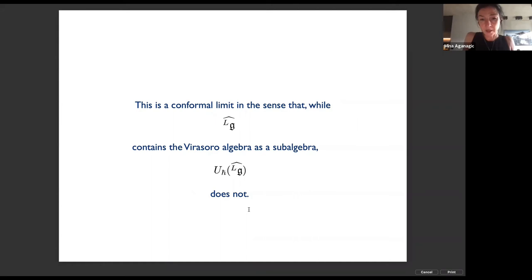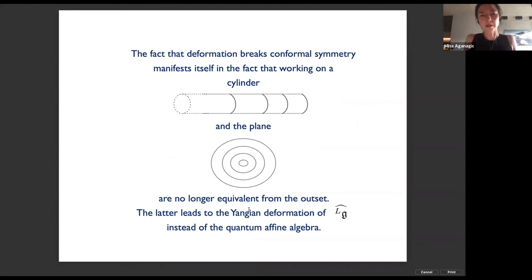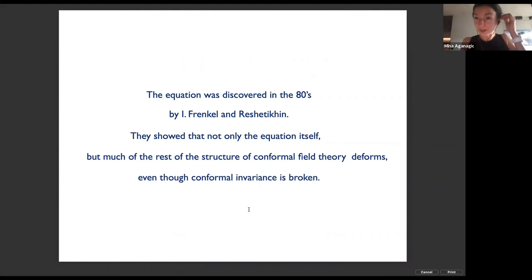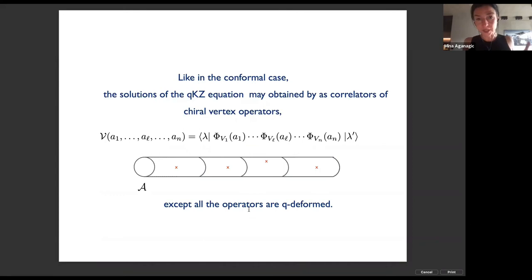The limit is a conformal limit in the sense that while the affine Lie algebra contains Virasoro as a sub-algebra, the quantum affine algebra does not. The deformation breaks conformal symmetry — working on a cylinder and on the plane is no longer equivalent. This equation — the qKZ equation as a deformation of the KZ equation — was discovered by Igor Frenkel and Reshetikhin in the 80s. They showed not only that you can deform the equation, but remarkably that all of the story of conformal field theory deforms.